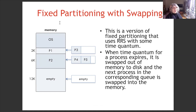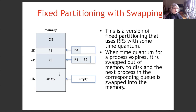Another approach is fixed partitioning with swapping. This is a version of fixed partitioning that uses round robin scheduling with some time quantum. When the time quantum for a process expires, it is swept out of memory to disk and the next process in the corresponding queue is swept into memory. We assume P1 is a small size process already loaded into memory and P3 is waiting in the related queue. For the medium size partition, P2 is already in memory and P4 and P5 are waiting in the queue. There is no process of large size, so that area is empty.